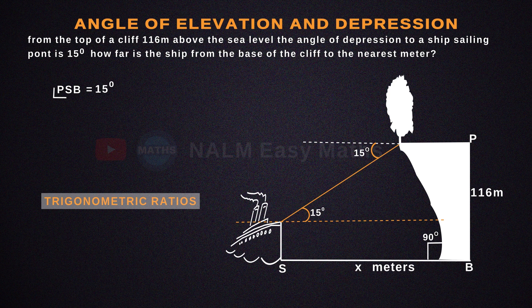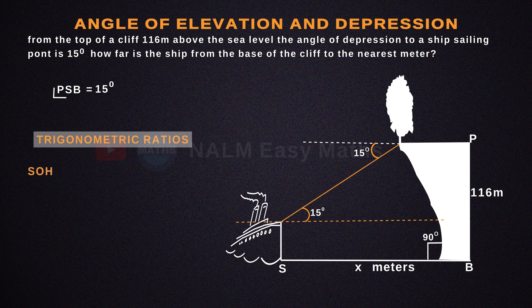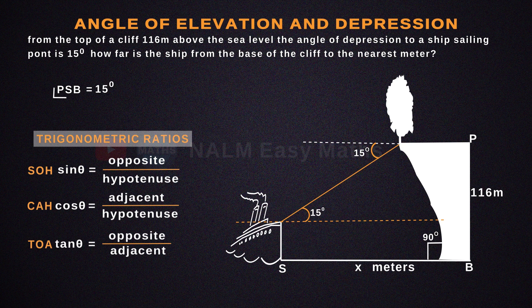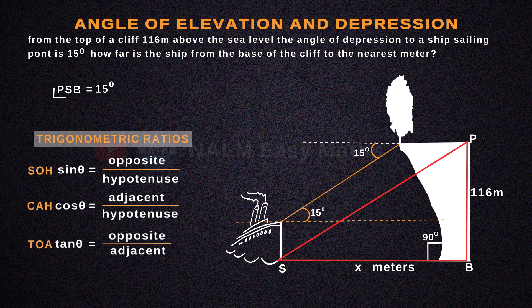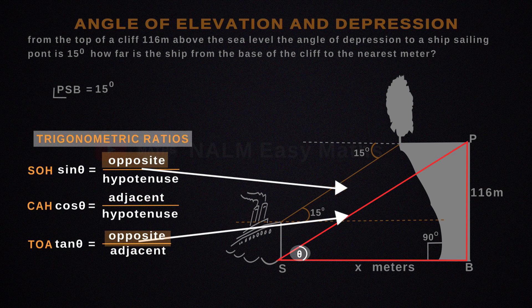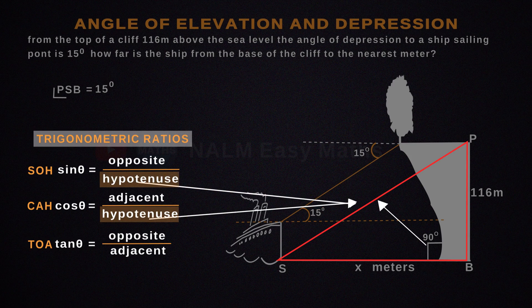Trigonometric ratios can be remembered as SOH-CAH-TOA. Sin theta equals opposite over hypotenuse, cos theta equals adjacent over hypotenuse, and tan theta equals opposite over adjacent. To help us figure out what formula to use, let's label the triangle. The adjacent is next to theta, the opposite is opposite to theta, and the hypotenuse is opposite to the right angle.